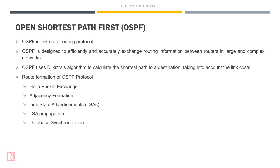Step 6: SPF Algorithm Execution — using the complete database, routers run the shortest path first (SPF) algorithm to compute loop-free paths to all known destinations, forming the SPF tree. Step 7: Route Table Creation — routers build their routing tables based on the shortest paths calculated in the SPF tree.